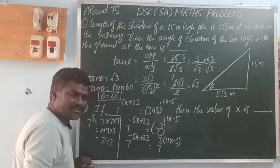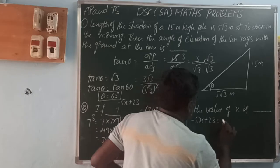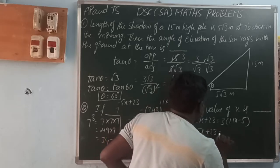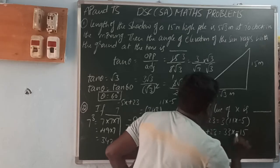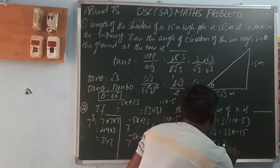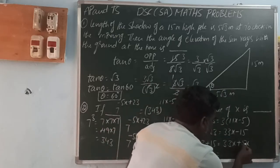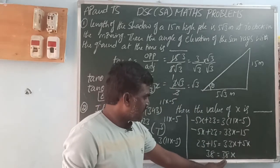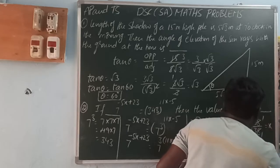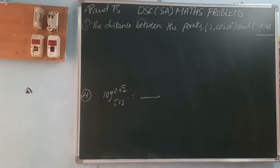Since the bases are the same on both sides, the powers are equal. So −5x + 23 = 3(11x − 5), which gives −5x + 23 = 33x − 15. Rearranging: 23 + 15 = 33x + 5x, so 38 = 38x. Therefore x = 1. The value of x is 1.